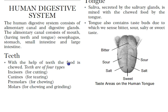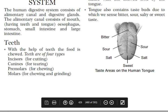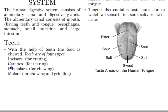With the help of teeth, food is chewed, initiating the digestion process. Teeth are of four types: incisors (for cutting), canines (for tearing), premolars (for chewing), and molars (for chewing and grinding). Premolars and molars are called cheek teeth.